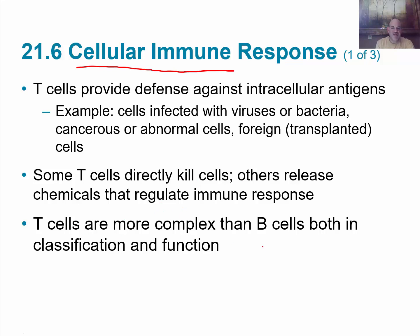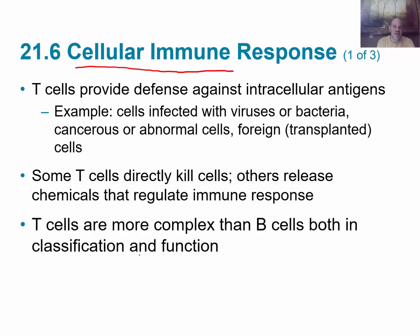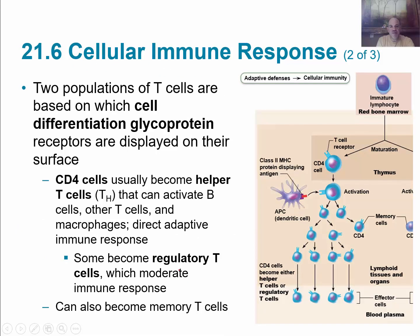T-cells are more complex than B-cells, both in classification and in function. There are two populations of T-cells, and these populations are based on the differentiation that occurs in the glycoprotein receptors that are displayed on their surface. So there's going to be two kinds: the CD4, which we're going to look at first, and then the CD8.